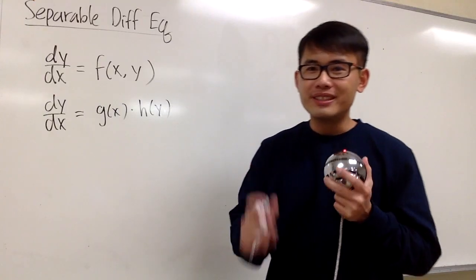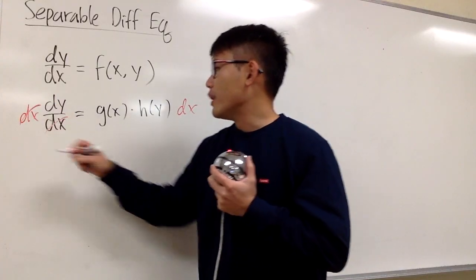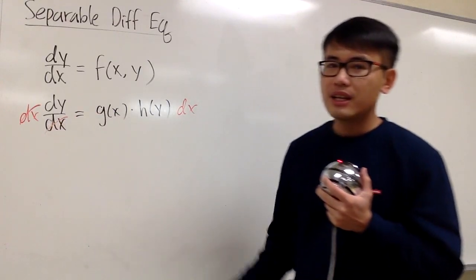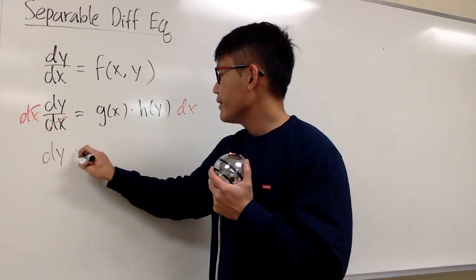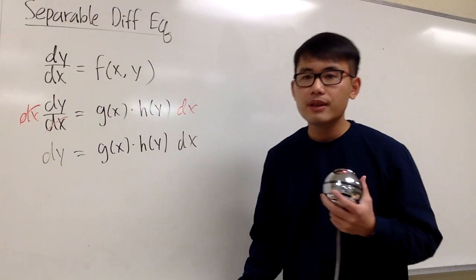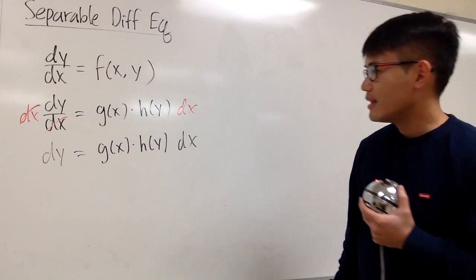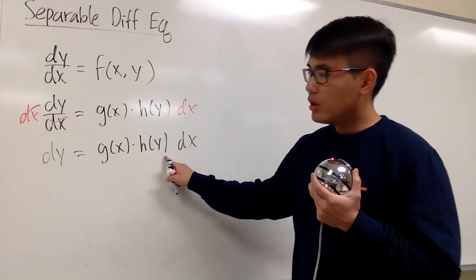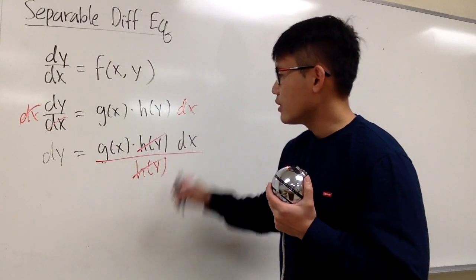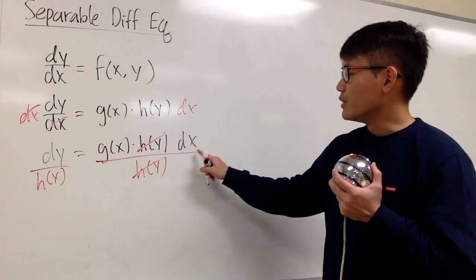Next, I suggest you do it this way: multiply dx on both sides. Whenever we are trying to solve a differential equation, the differential should not be in the denominator, so let's take care of that first. We'll have dy equals g of x times h of y times dx. Then you want to have all the y's together on one side and all the x's on the other. We have h of y, which should be together with dy, so let's divide both sides by h of y.